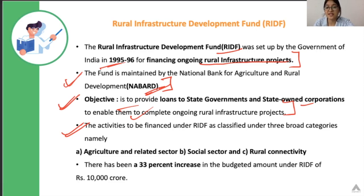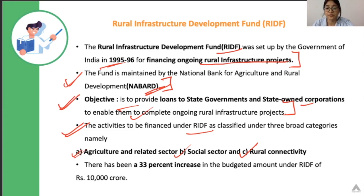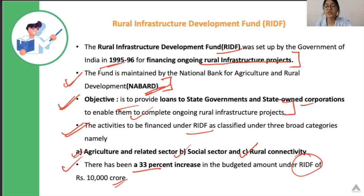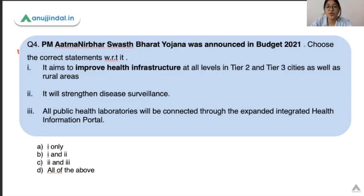The activities financed under this fund fall under three categories: first, the agriculture-related sector; second, the social sector; and third, rural connectivity — for example, rural roads construction. There has been a 33% increase in the budgeted amount under this fund, and it has reached Rs. 10,000 crore. That is why this question was included — because recently there was an increase in the allocated amount under this fund.